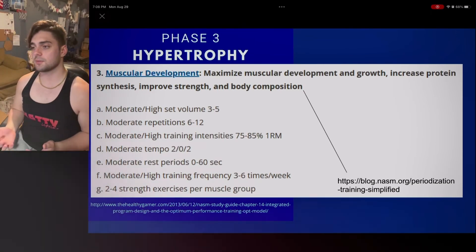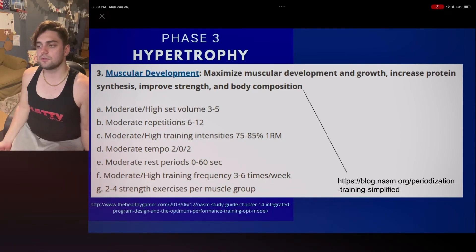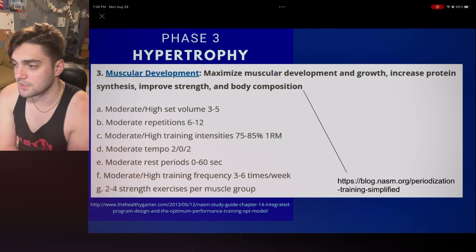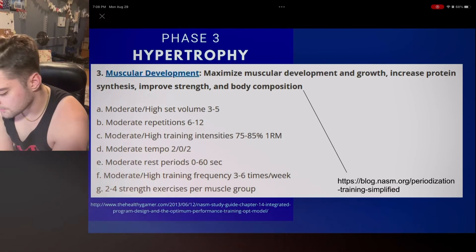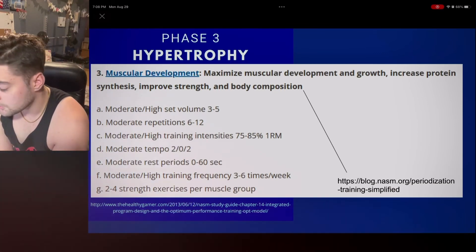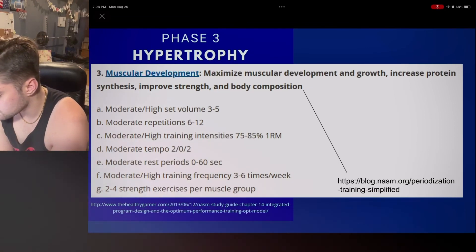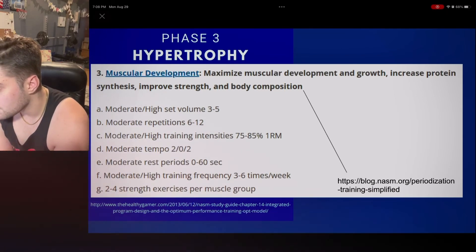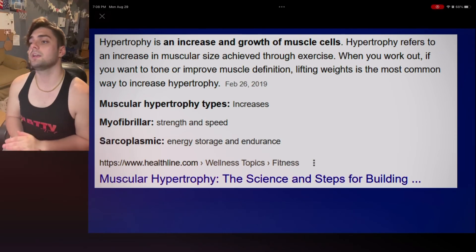The 202 tempo looks like: two counts down, zero pause, two counts up. If you give someone a program like this, they're not going to go to the gym looking like an idiot. All those acute variables are worth putting on a flashcard — associate the three to five sets, six to 12 repetitions, and 202 tempo with phase three, hypertrophy.